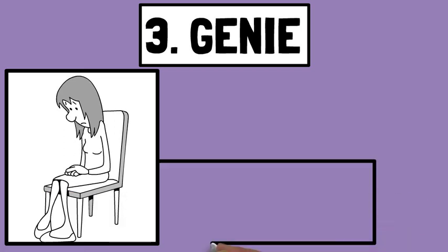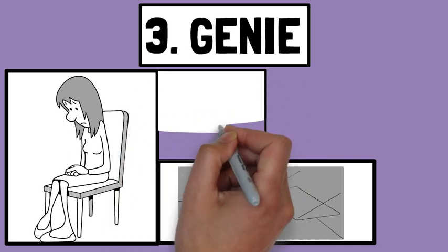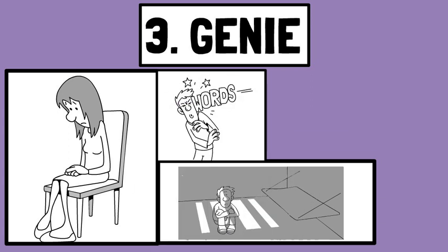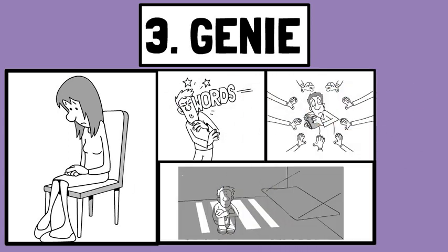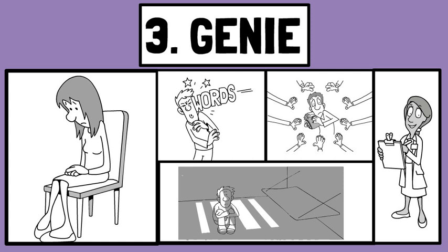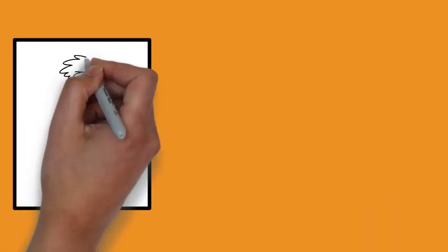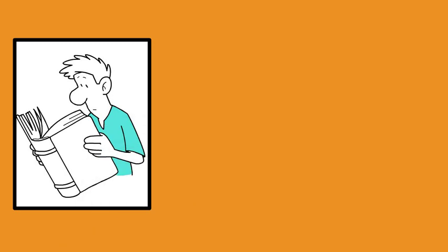Example three: Genie. Genie was a young girl who was discovered in 1970 after being severely neglected by her parents and kept in isolation for most of her life. Her case study was pivotal in investigating the effects of social isolation and abuse on human development. Genie was unable to develop language skills and had difficulty interacting with others. She was studied by a group of researchers over several years to better understand the effects of neglect on cognitive development.